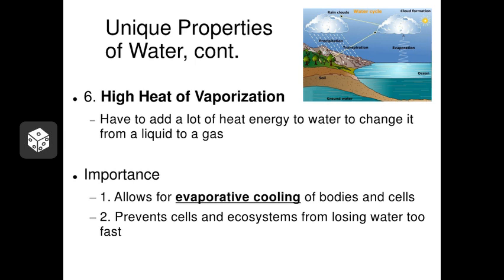Property number six relates a lot to property number five the high heat capacity. Water has a very high heat of vaporization and what that means is that you have to add a lot of heat energy to it to get it to evaporate to go from a liquid to a gas. Conversely you have to take a lot of heat energy out to get it to go from a gas to a liquid or a liquid to a solid. This is what allows the water cycle that you learned about in elementary school to work. It also allows for evaporative cooling. When you sweat the water in the sweat is going to absorb a lot of heat energy before it evaporates and when it evaporates it will carry all that heat energy away from your body. So that's the reason that sweat cools you off. This also helps prevent cells and ecosystems from losing too much water due to evaporation. It means that if we turn the temperature in the room up a couple degrees you're not going to lose all your water to evaporation and dehydrate and die.